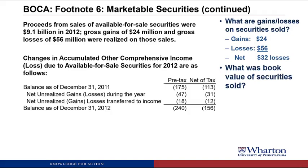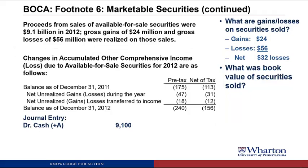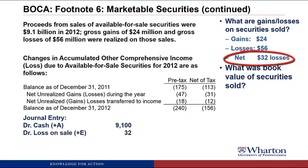So what was the book value of the securities sold? We know we had a realized loss, and we know the cash. We need another piece of information to figure out the book value, and that will come from the next part of the footnote — the change in accumulated other comprehensive income or loss due to available for sale securities in 2012. Let's walk through the journal entry. We can debit cash for 9.1 billion, as stated in the note. Next, we can debit loss on the sale of investments for 32 — the net loss. You could also have debited loss of 56 and credited gain of 24; it gets you the same net number of 32.